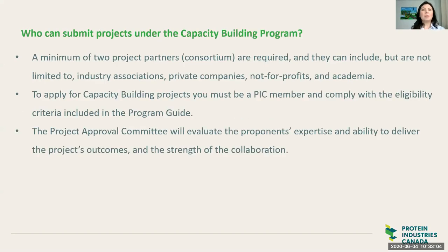Who can submit projects under the capacity building program? We require a minimum of two project partners — a consortium — and they can include but are not limited to industry associations, private companies, not-for-profits, and academia. You must be a PIC member to apply and comply with the full eligibility criteria that will be included in the program guide. The Project Approval Committee will evaluate the proponents' expertise, ability to deliver the project's outcomes, and the strength of the collaboration.